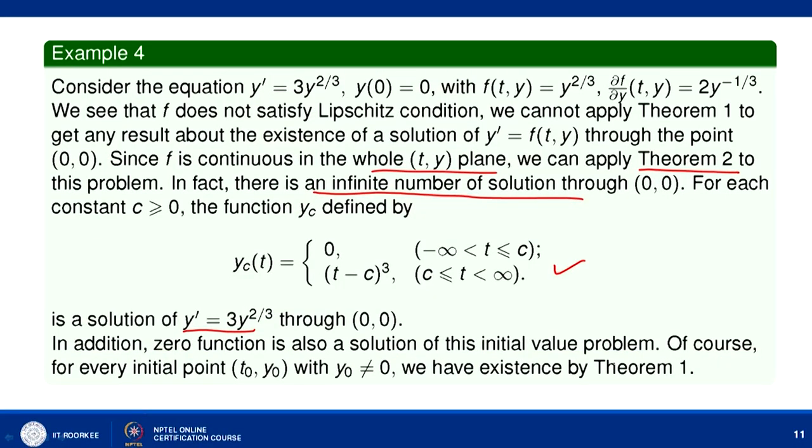In fact, we can define a two-parameter family of solutions of the same problem. So not only does the solution exist, but solutions are infinite in number. Additionally, the zero function is also a solution of this initial value problem. For every initial point (t₀, y₀) with y₀ ≠ 0, existence follows from Theorem 1. It is the initial condition y(0) = 0 that creates problems. If we replace this initial condition with a non-zero number, we can apply our existence and uniqueness theorem and say it has a unique solution.